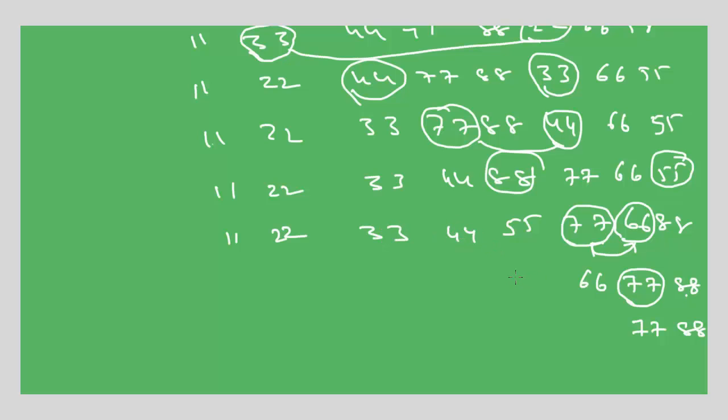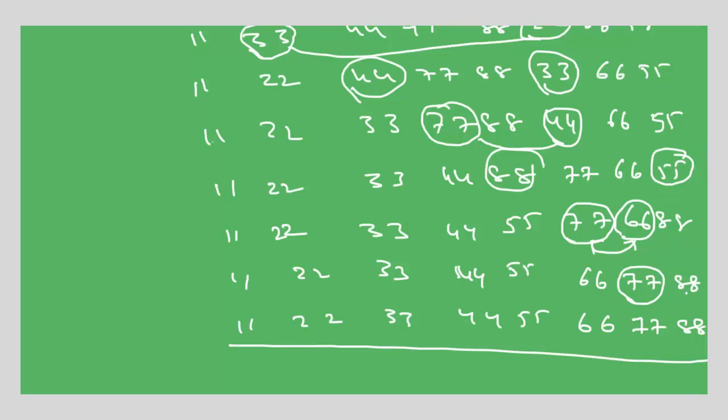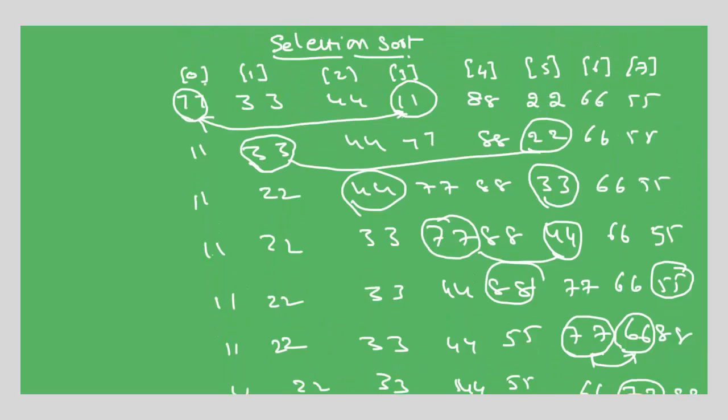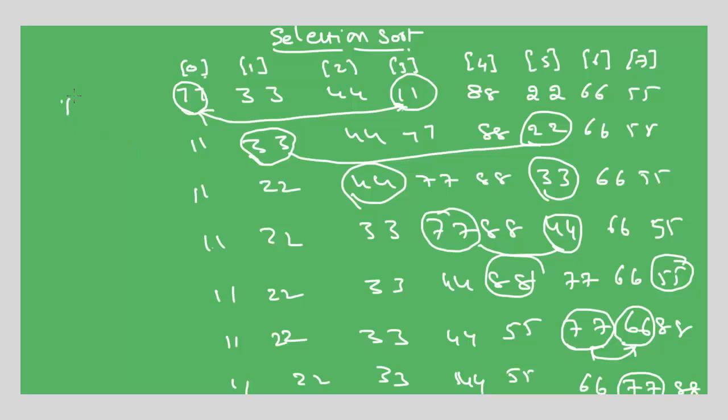So this is the process of selection sort. All this could be done in different passes. This could be considered as pass one, pass two, three, four, five, six, seven, eight.